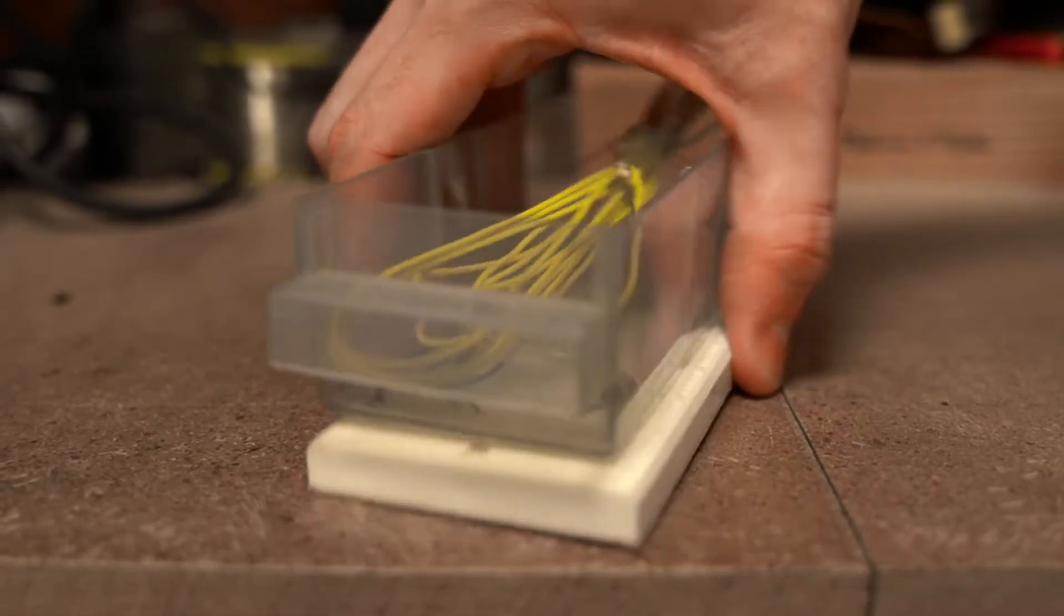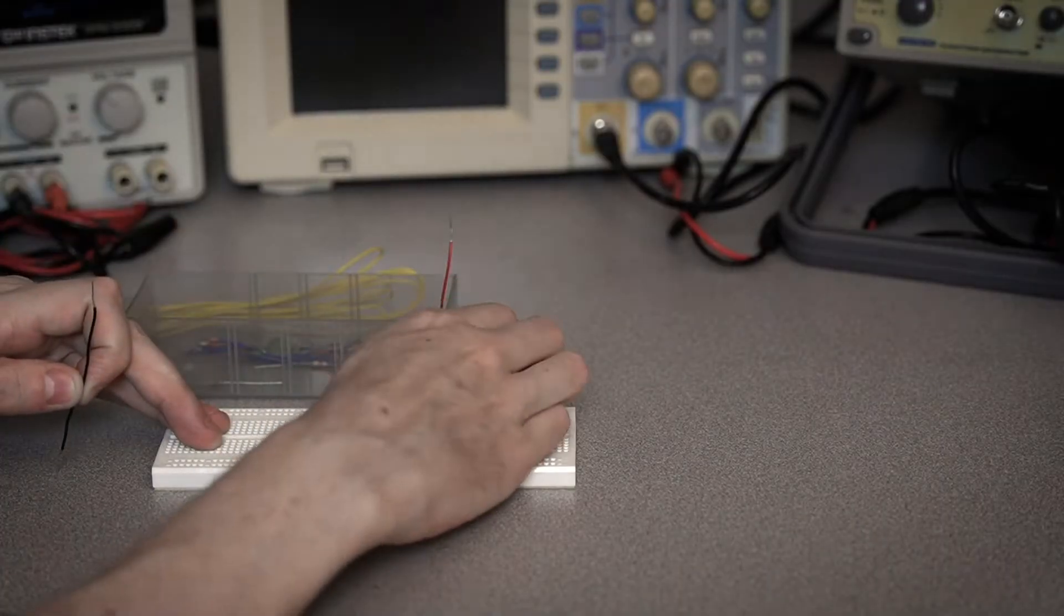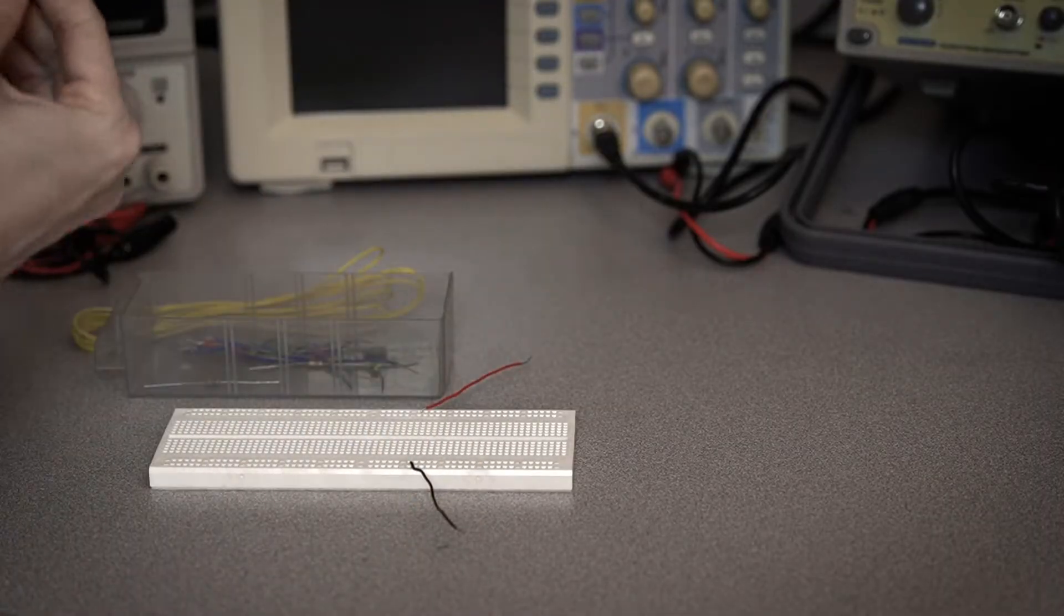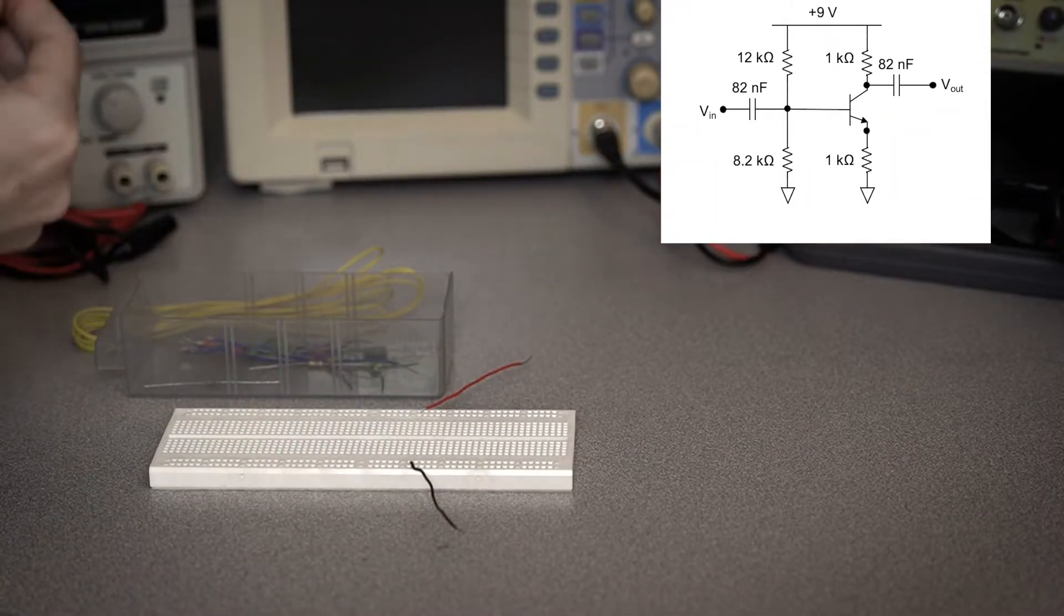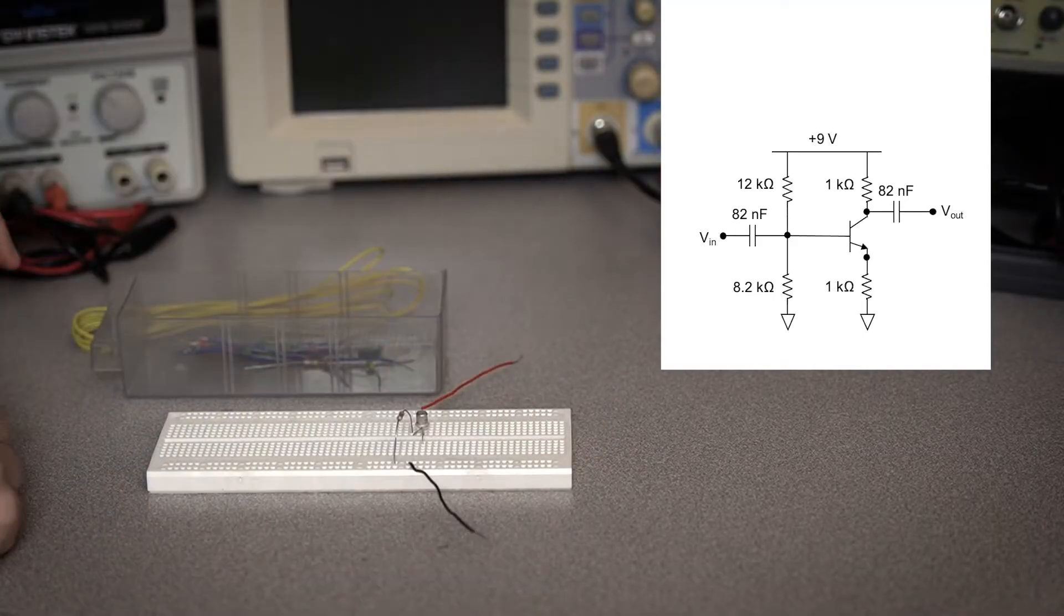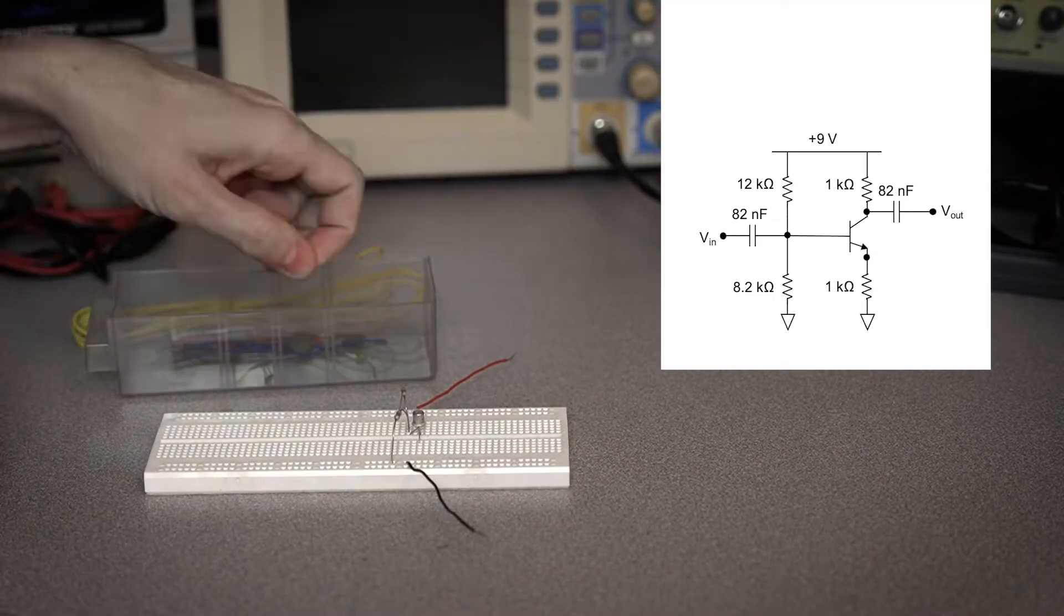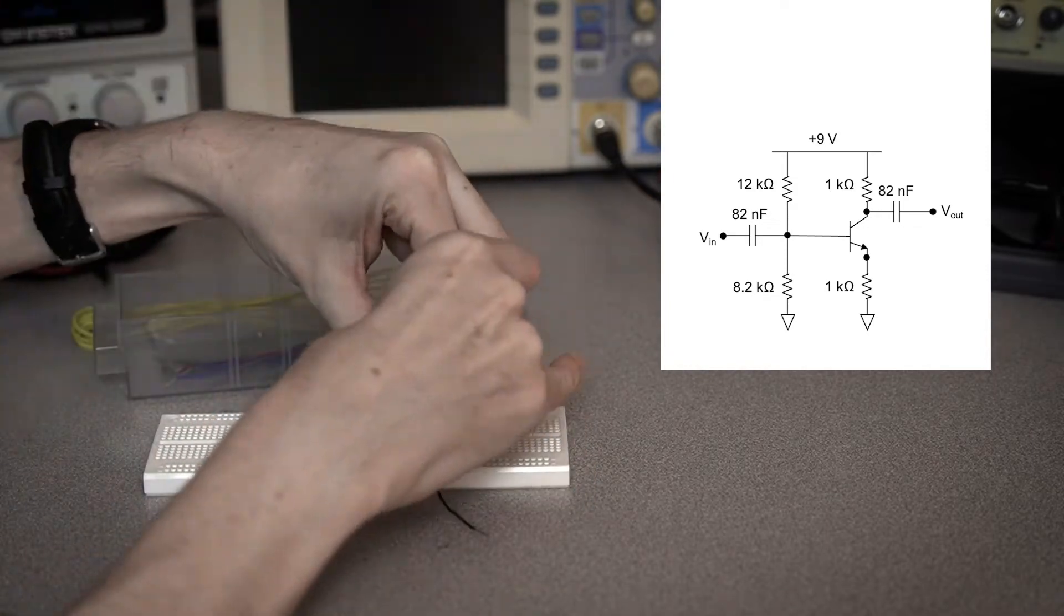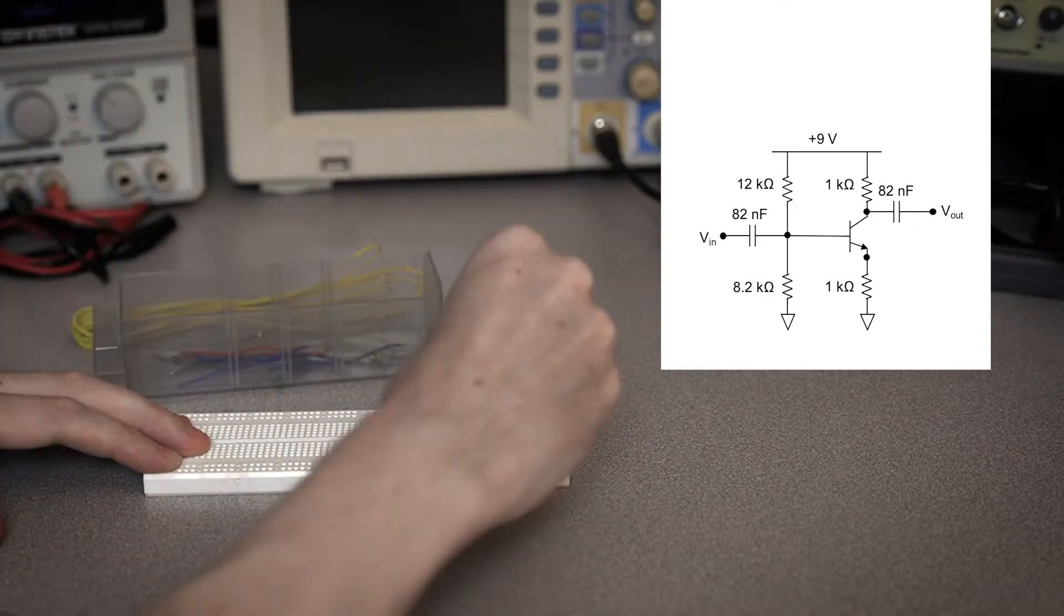Op amps typically don't have good response at such high frequencies, so to build the Colpitts oscillator today, we're going to use a transistor amplifier. Because there are many connections in the Colpitts oscillator, I think it's better to put together the amplifier portion of the circuit first.